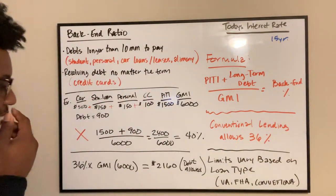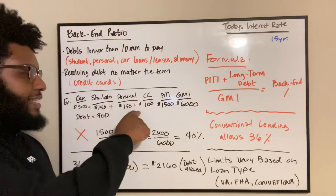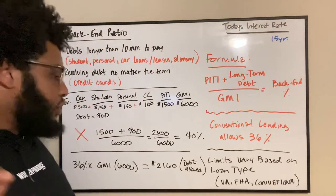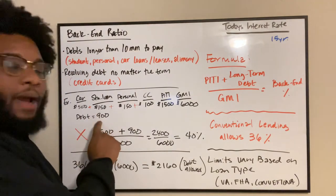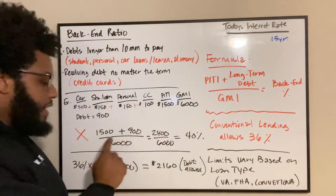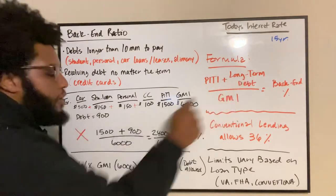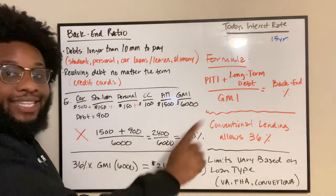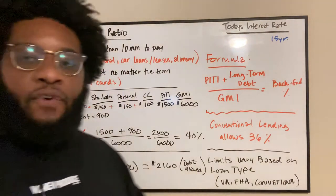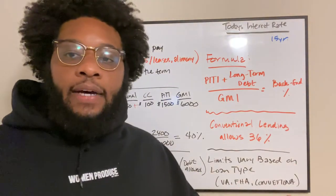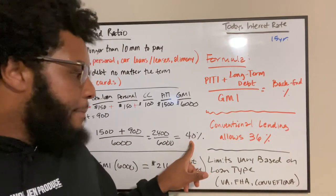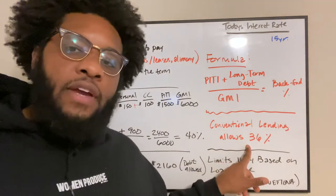Back to our example. If I have all of these debts, it comes down to a total of $900. That's $900 you pay out every single month no matter what. You add that plus the $1,500 PITI, plus your long-term debt, gives a total of $2,400 a month. That's all your debt every single month. Divide $2,400 by your $6,000 gross monthly income — that gives you a 40% back-end ratio, which boots you out of the conventional lending qualification.